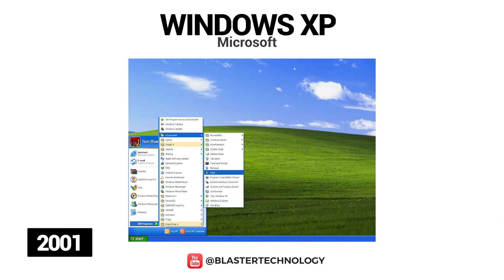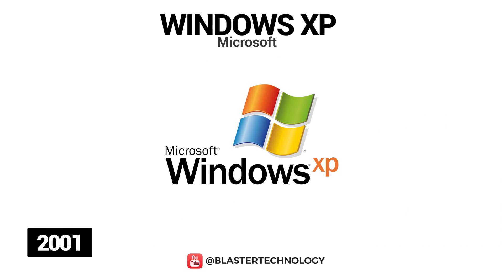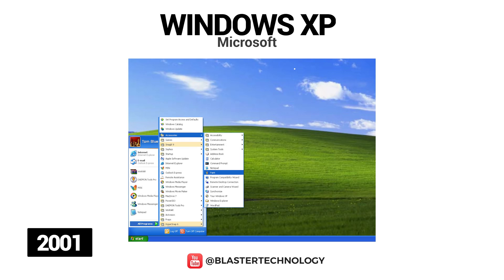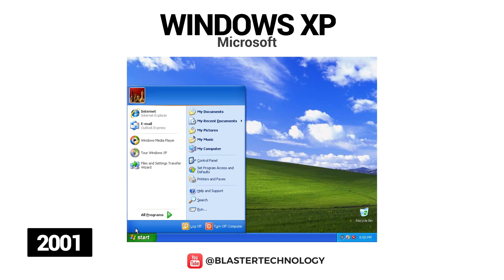In 2001, Microsoft released Windows XP in two versions, Home and Professional. This version was a real success because it was really designed for the consumer, especially in terms of design. It had strong colors, the start button was green, and the themes could be customized. Among the important functions it was equipped with were CD-burning software, desktop search, remote desktop, and improved security.